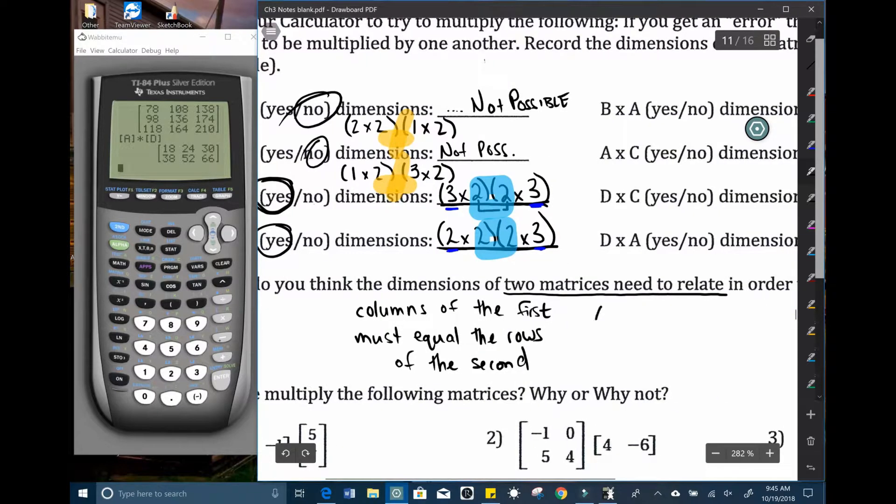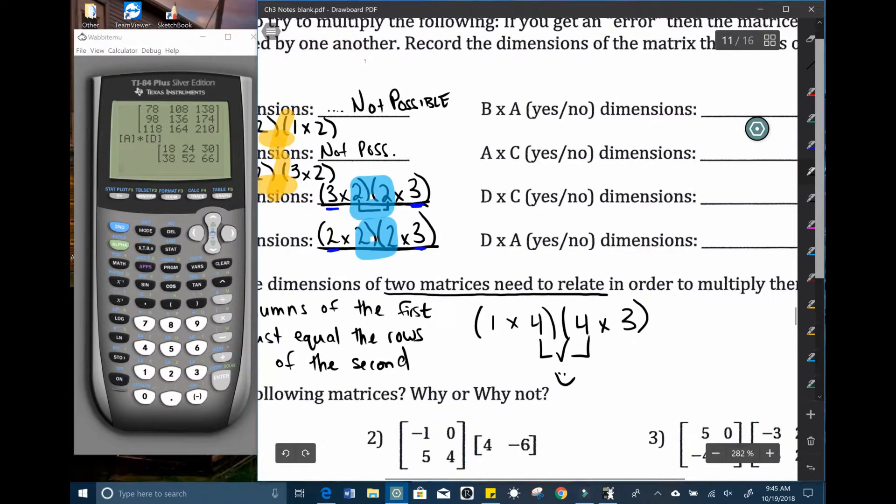For example, if you have matrix say one times four, you can multiply that by a four by three. These two numbers work out, so it is possible. And the matrix that you would get out of it would be a one by three. So you would get a one by three matrix as a result.